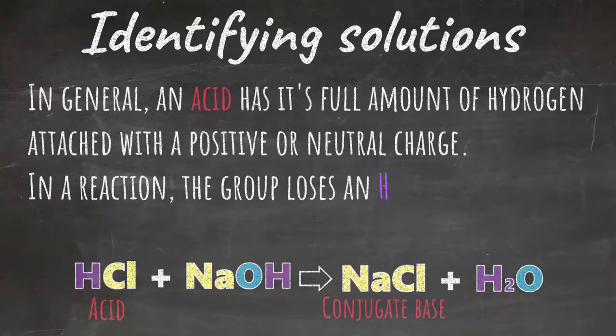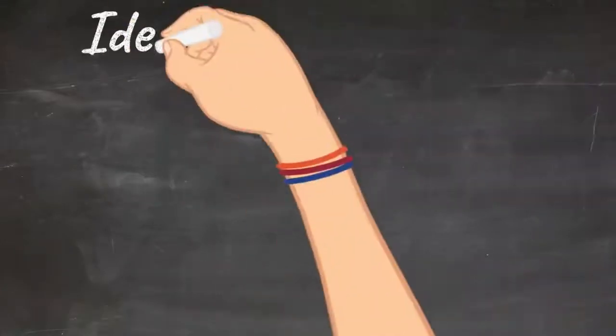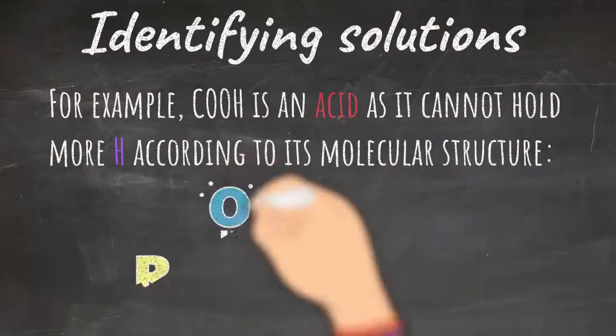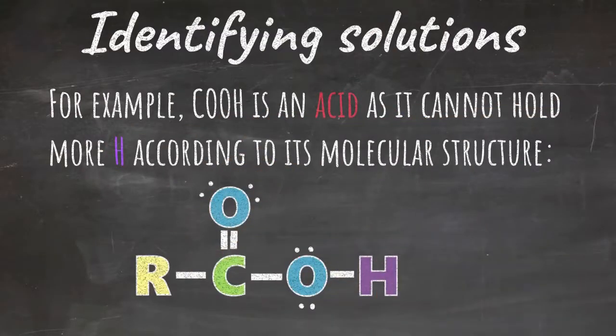And it turns into its conjugate base on the right-hand side, which is sodium chloride or table salt. This is clearly an acid to conjugate base reaction because the acid loses a hydrogen. For example, with amino acids, the carboxylic acid is an acid, as it cannot hold more hydrogen according to its molecular structure.